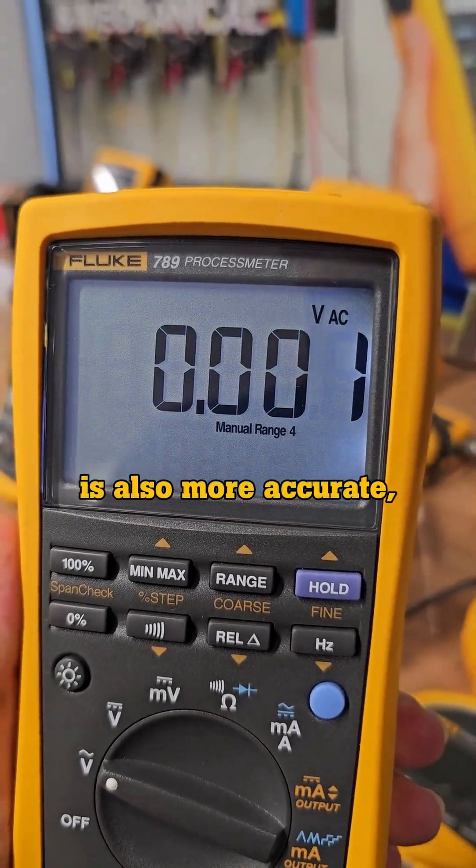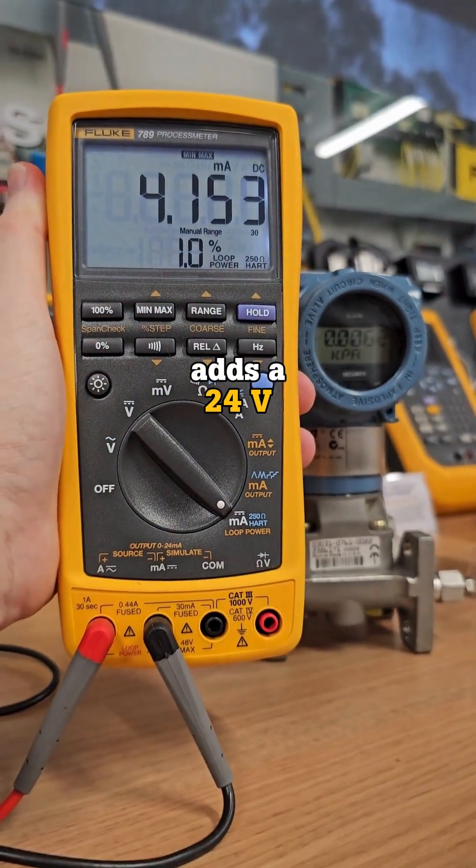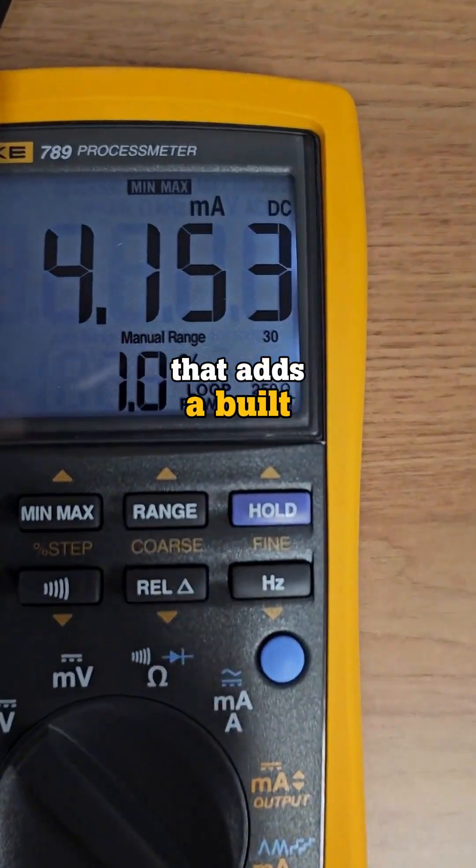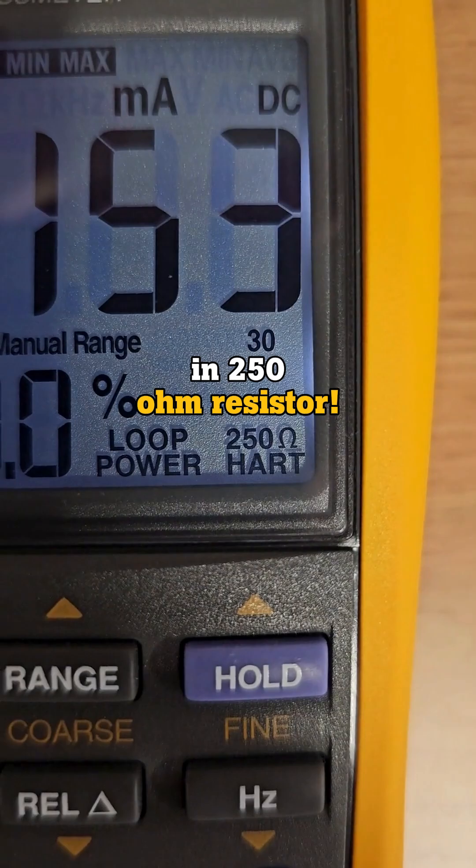The Fluke 789 is also more accurate, adds a 24V loop power supply and a heart mode setting with loop power that adds a built-in 250 ohm resistor.